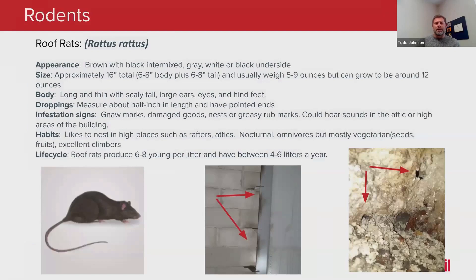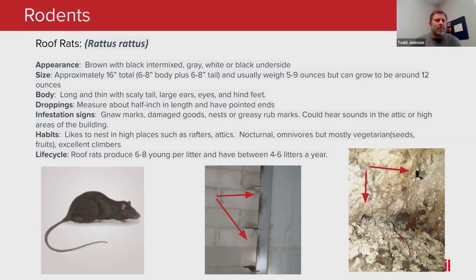Another rat you may encounter — particularly along the coast or major waterways like the Mississippi — is the roof rat. Roof rats are typically brownish to black in color, around eight inches long, and their tails are equivalent to or longer than their body length. They have large ears, large eyes, and large hind feet.